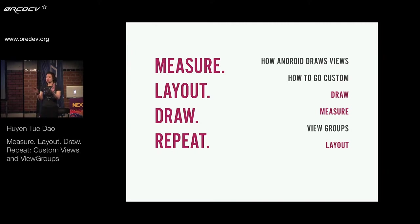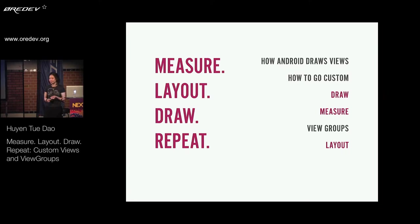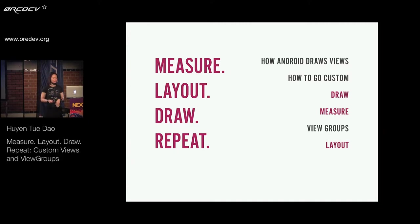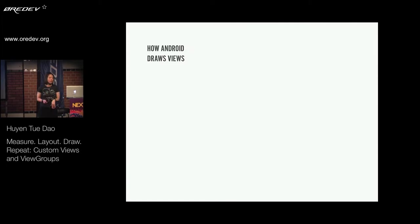I'll talk about different ways to go custom. I'll talk about three different things in kind of the reverse order that I have them in the title. We'll talk about how to draw in custom views, how to measure views, and how view groups differ from doing views. And then finally, we'll talk about layout. So first thing: how does Android draw its views?